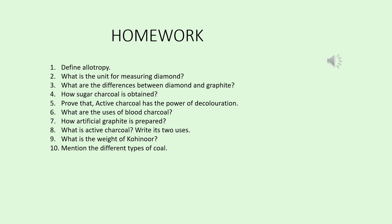Assignment questions: 1. Define allotropy. 2. What is the unit for measuring diamond? 3. What are the differences between diamond and graphite? 4. How is sugar charcoal obtained? 5. Prove that active charcoal has the power of decoloration. 6. What are the uses of blood charcoal? 7. How is artificial graphite prepared? 8. What is active charcoal? Write its two uses. 9. What is the weight of the Kohinoor? 10. Mention the different types of coal.